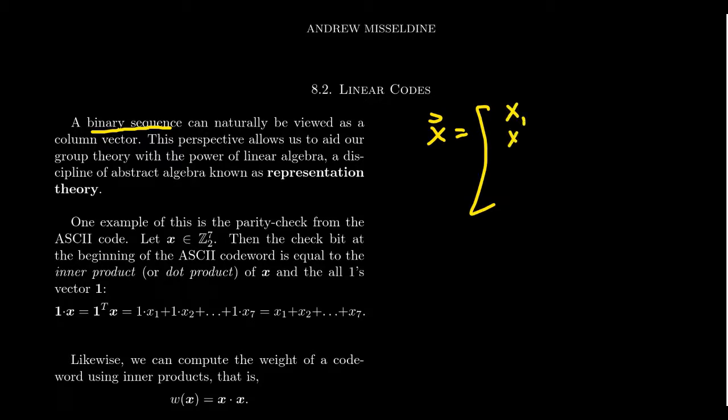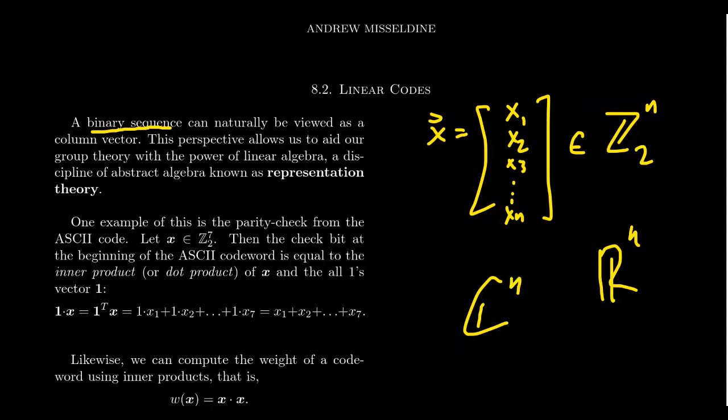So why are we using linear algebra here? The basic idea is that when we have a binary sequence, the sequence of ones and zeros, we can identify that sequence x as like a vector. We can write it as a column vector with the first entry, the second entry, the third entry, all the way down to the nth entry. These column vectors can be naturally associated as vectors inside the vector space Z_2^n.